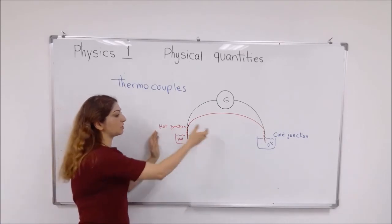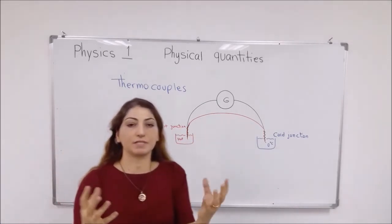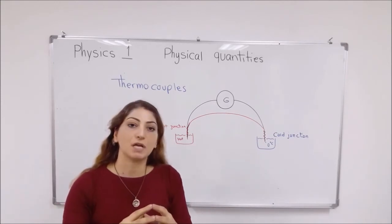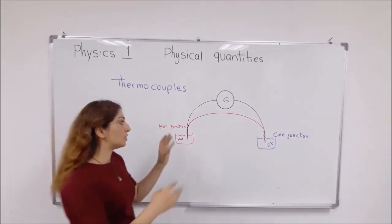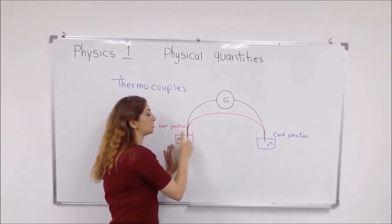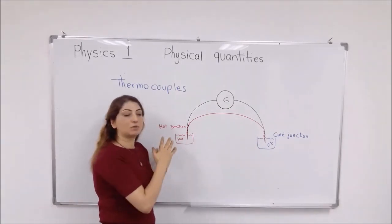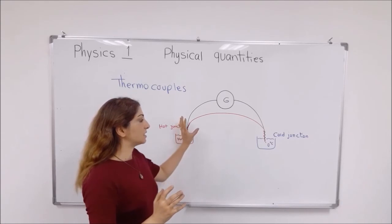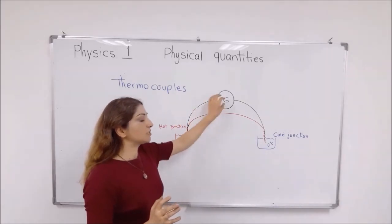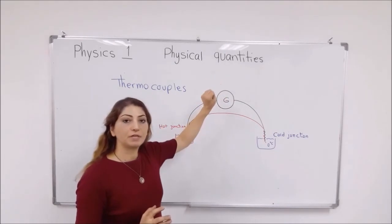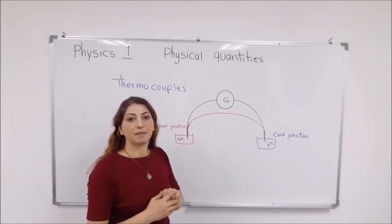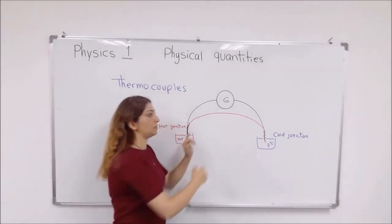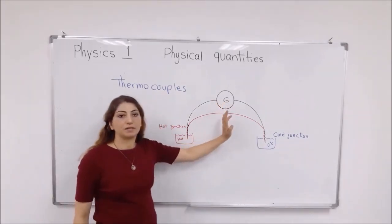And when these two junctions are placed in different places that have different temperatures, this difference in temperature causes a voltage to be formed here. So the difference between these two junctions of the wires causes a very small amount of electricity to be created here, and this causes a voltage difference. The voltage difference can be measured by using a galvanometer, voltmeter, or ammeter here. So you can measure the voltage difference between these two junctions by using a voltmeter or galvanometer.